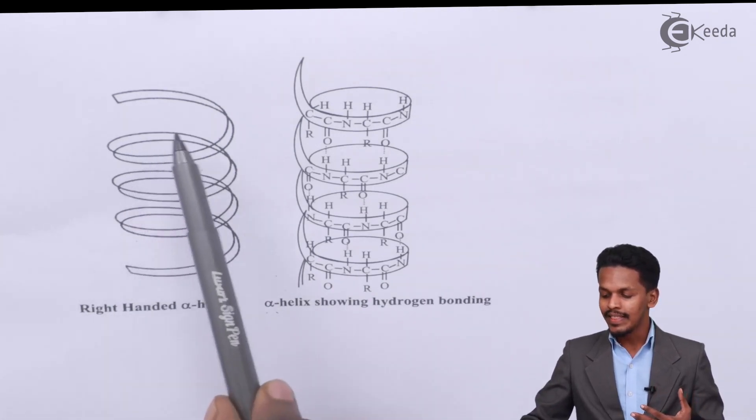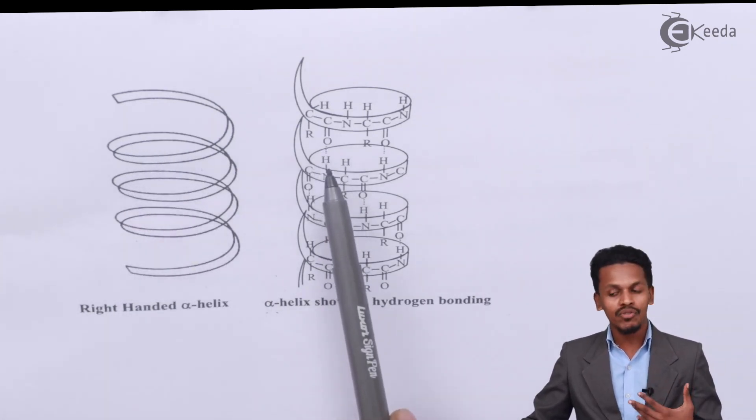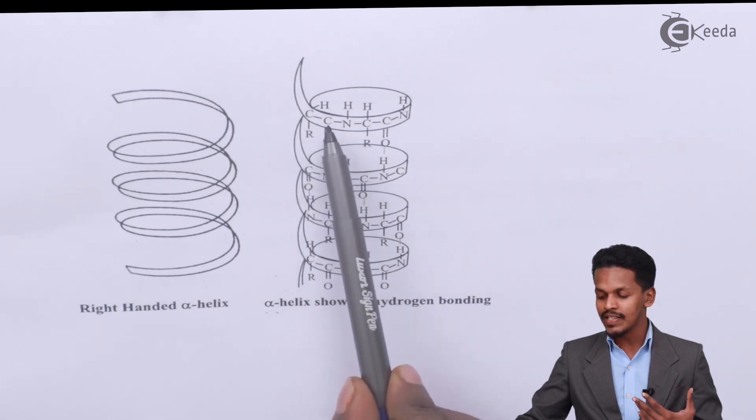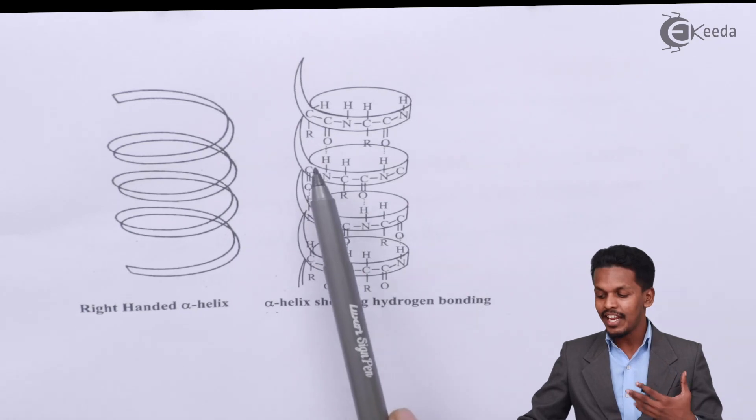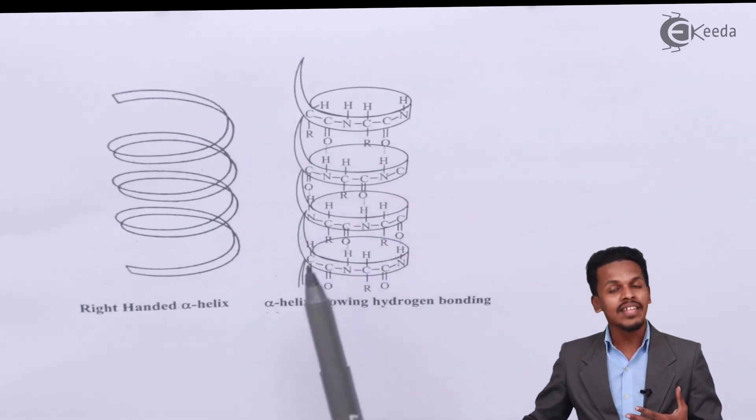As you can see, there is a formation of intra-hydrogen bonding over here where this C double bond O forms the hydrogen bonding with the NH group within the same protein itself.